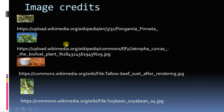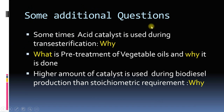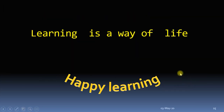These are links from which the images were taken. Some additional questions to explore: Why is acid catalyst sometimes used during transesterification instead of the usual base catalyst such as sodium hydroxide or potassium hydroxide? What is the pre-treatment of vegetable oil and why is it done? Why is a higher amount of catalyst used during biodiesel production than the stoichiometric requirement? That's all for today — thank you very much.